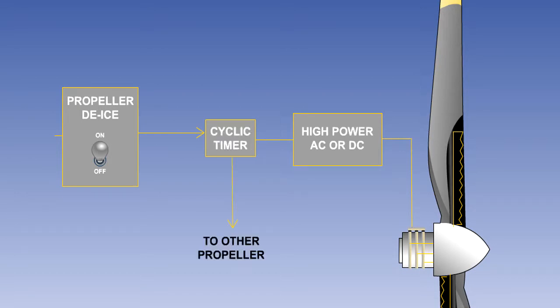These systems consume a relatively high amount of electrical power. However, they are controlled by employing a cyclic timer, which will de-ice the propeller blades of one engine at a time, thus reducing the power requirement.